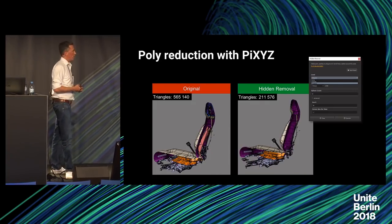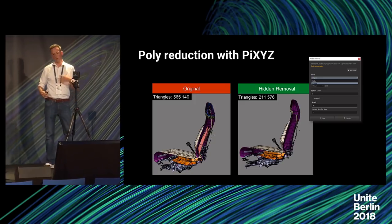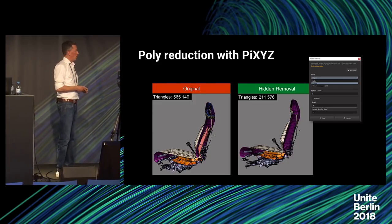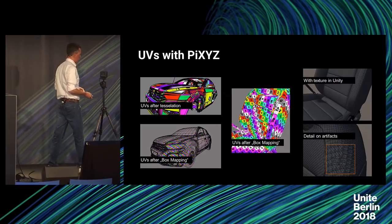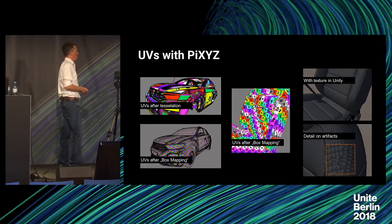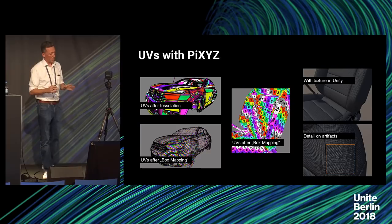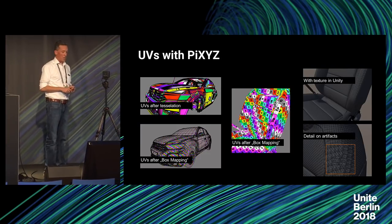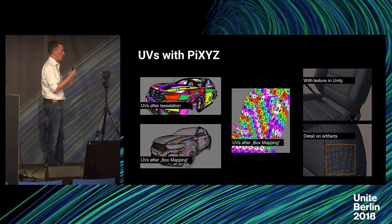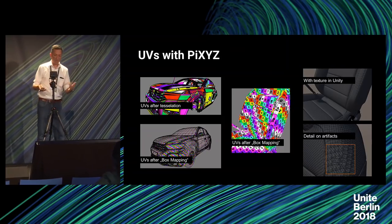The hidden removal feature lets you clean the geometry very easily — you can select whether to delete parts or polygons, and it's pretty fast, giving cavity reduction of nearly 50 percent. For UVs, the UV layout directly after tessellation is not ideal, but the box mapping approach in Pixies gives a really good first UV setup. However, for very detailed work — important for design or marketing — you need manual work; a fully automatic UV setup is not yet feasible.